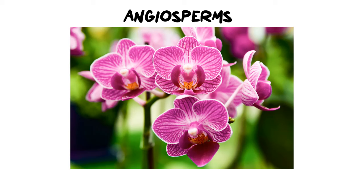Hi everybody and welcome back. Today we are going to do the final installment in our plant diversity series. We're going to look at angiosperms, and these are the final piece in our puzzle. It is the last step of our plant evolution. These are the most developed of all of our plants, and we are going to look at some of their specific details, what makes them so unique from the other groups. In this video I'm also going to recap alternation of generations, so if you need to you can skip over that part and go straight into the life cycle of angiosperms.